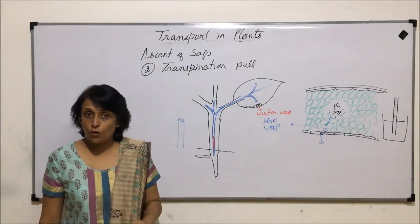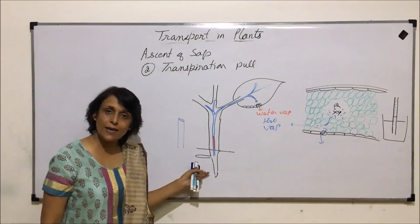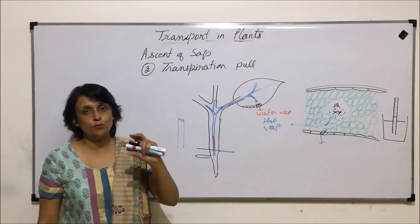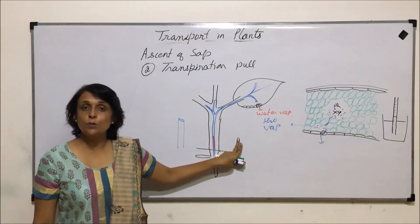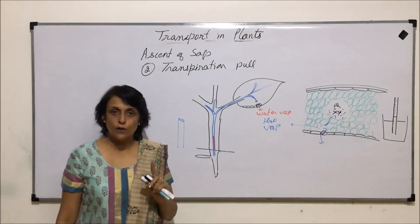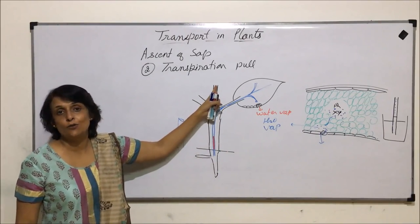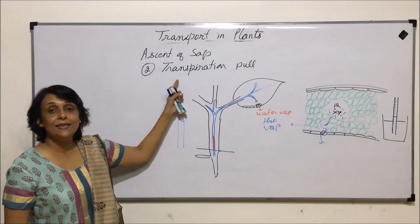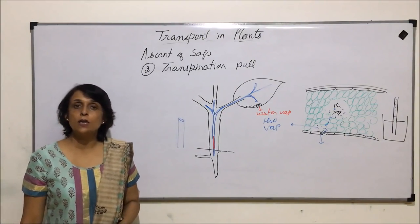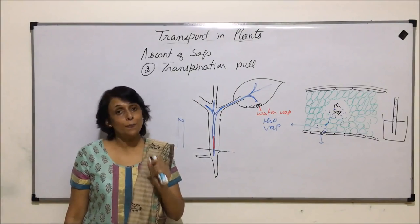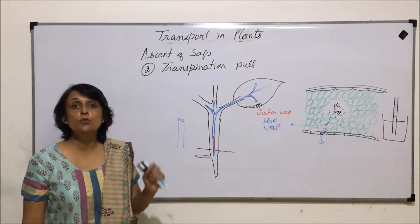Root pressure does help, but only in short plants. In tall plants it helps push water only up to a certain number of centimeters. So the two processes that help in absorption and transport of water are: first, absorption through root hair, and second, ascent of sap. By root pressure and transpiration pull, water can reach all parts of the plant. One important thing to remember is that movement of water is unidirectional — it always moves from root upwards.